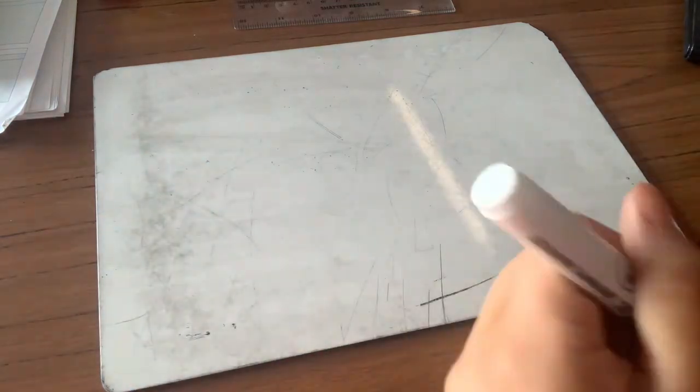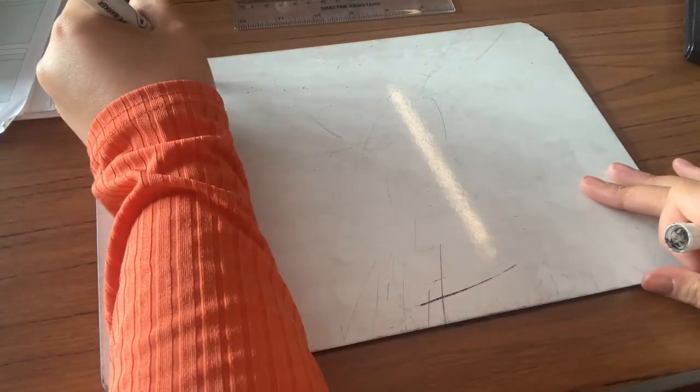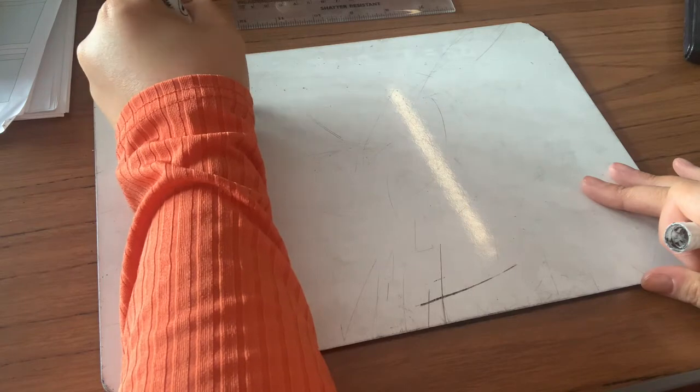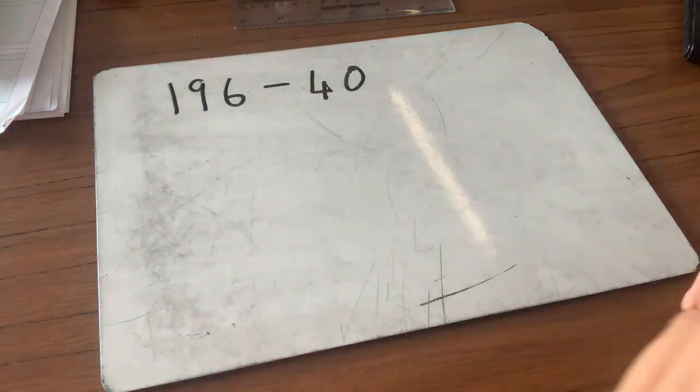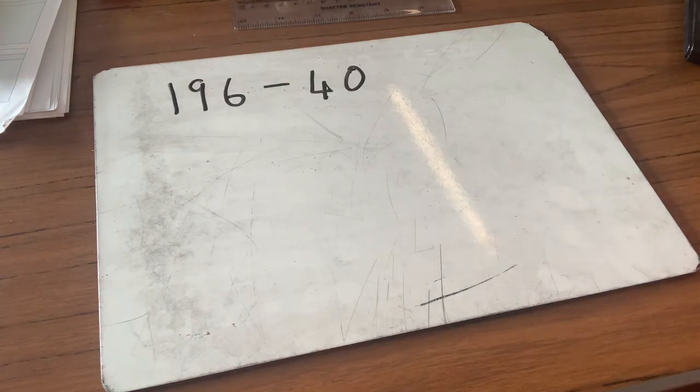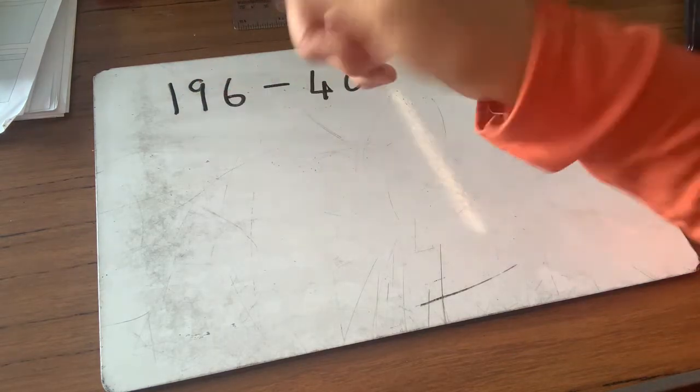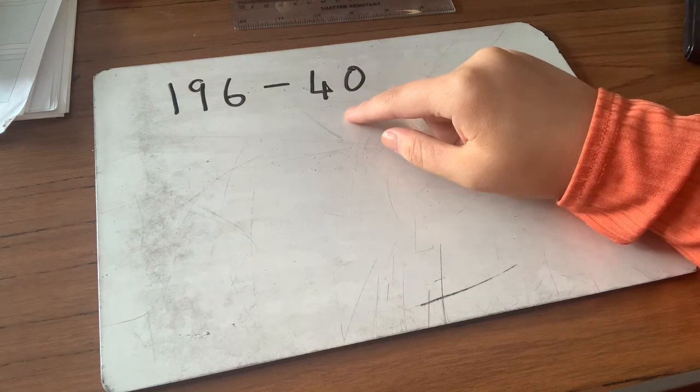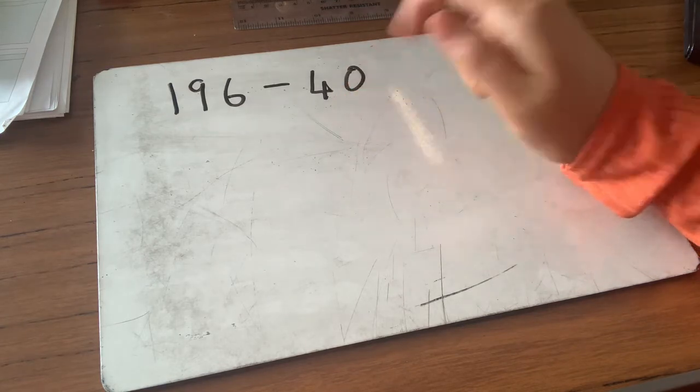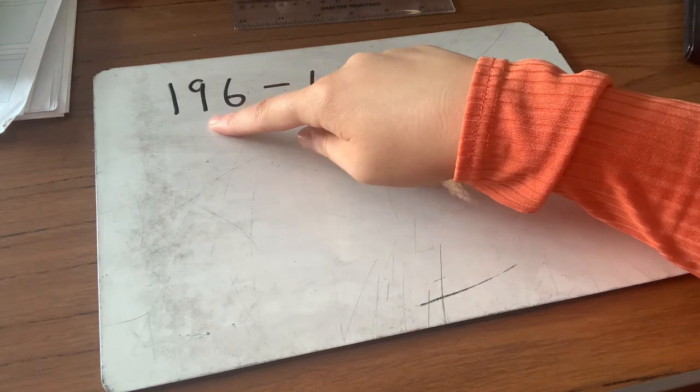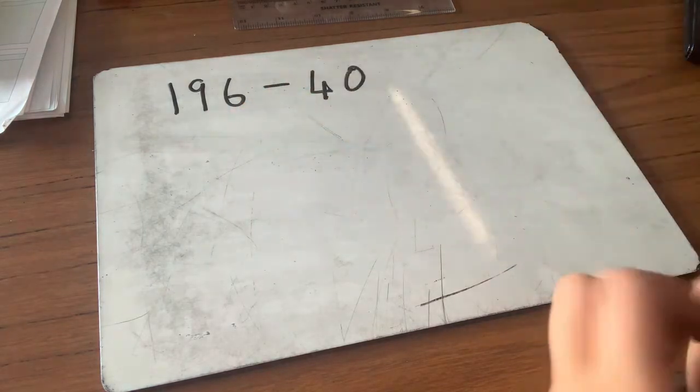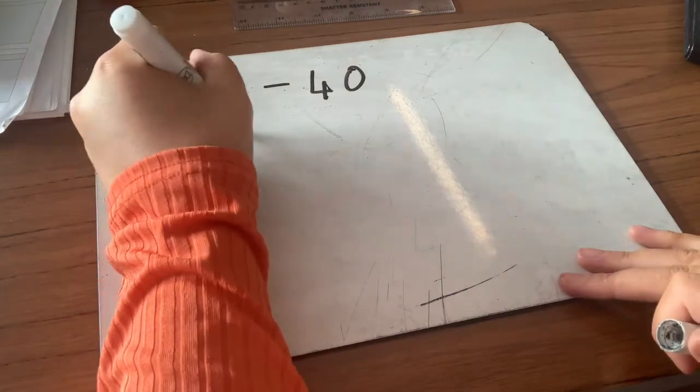Let's do a couple more examples. So we've got 196 take away 40. There are a couple of ways to do this. We could just actually take the 10s away from this one, if you're comfortable doing that. But if you want to use the counting on method, how we would do it, we know that there's six 10s up to 100, and then nine more 10s to get up to here. So nine and six would make 15 10s, plus six units would be 156.